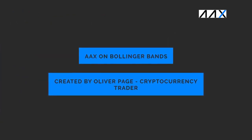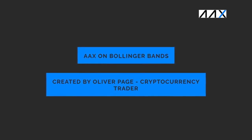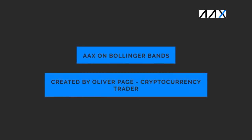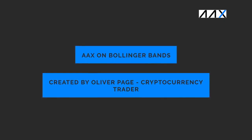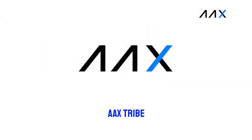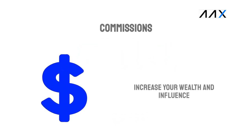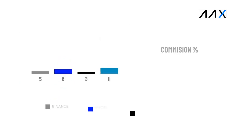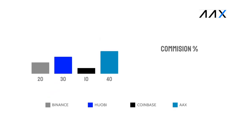I hope that you managed to take something away from this and learn a bit more about Bollinger Bands. Now let me tell you quickly about a new feature on AAX called the AAX Tribe. Do you feel ready to invest in Bitcoin and other cryptocurrencies? A brilliant way to do this is through the AAX Tribe, an awesome affiliation scheme which AAX have recently released. The AAX Tribe allows you to receive commissions from traders who join the AAX exchange through you — when they trade, you earn. AAX offers an extremely competitive referral scheme with you earning 40% from your tribe members' trades.